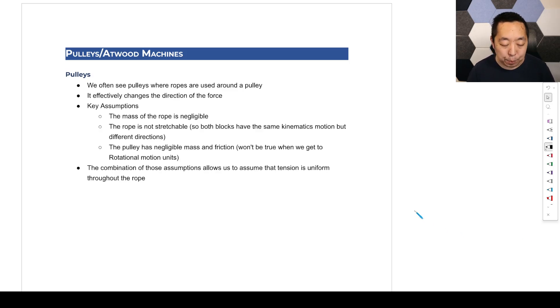Alright, so we're going to be taking a look at pulleys and Atwood machines in this video. Honestly, the process is pretty much the same. There are a few key assumptions we're going to make, but if you follow the same problem-solving steps, there's nothing really any different than what we've done before. So often pulleys are things where you'll see ropes that go around the pulley. It effectively is just changing the direction that we're applying the force.